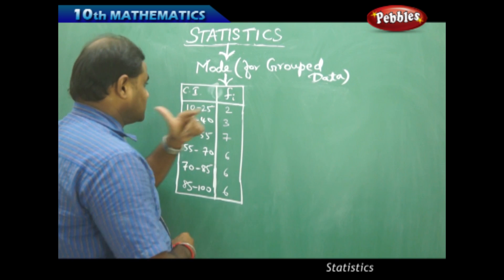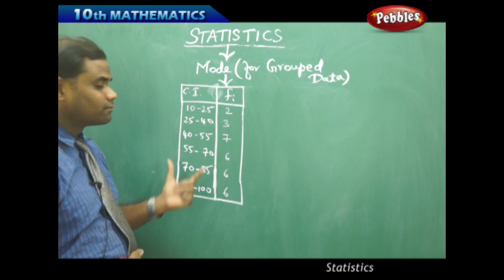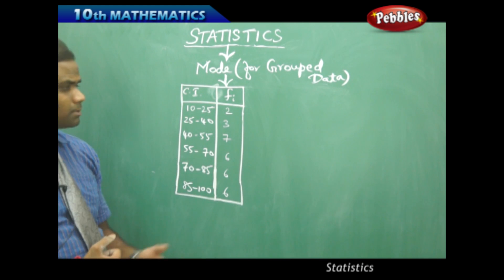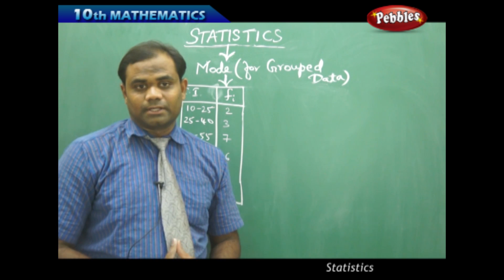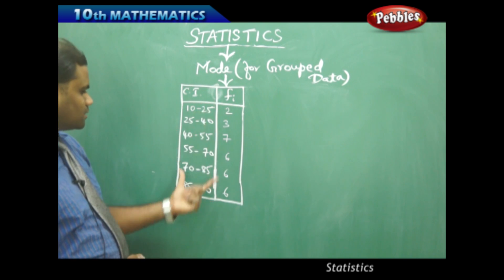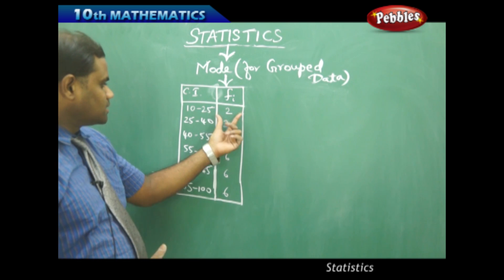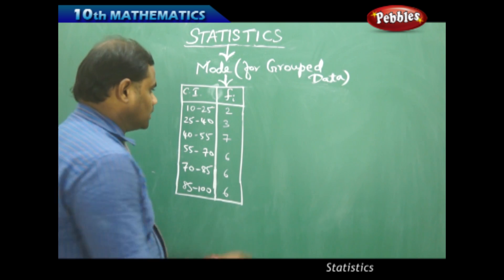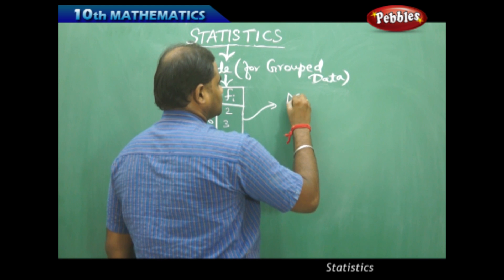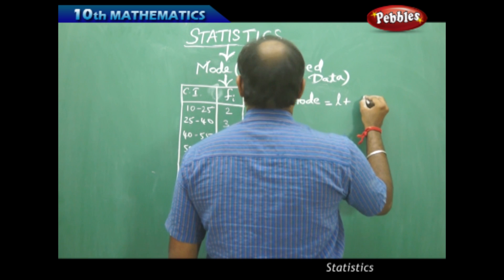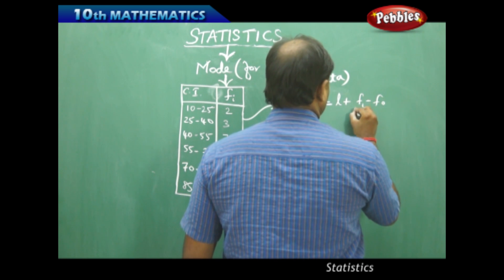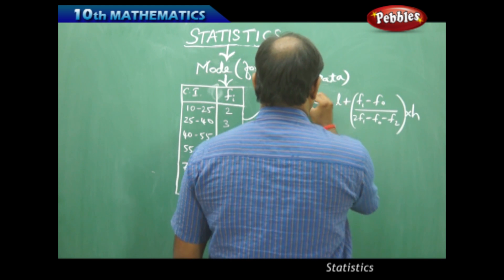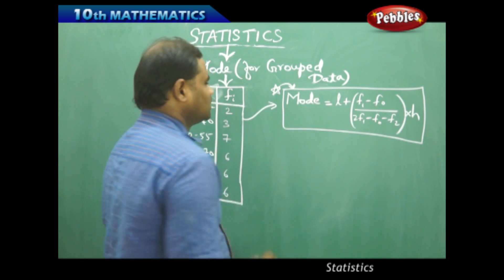Now let's see how to calculate mode for grouped data — data grouped into class intervals. Taking the same problem from the previous session, where we have class intervals of marks obtained by students in mathematics out of 100, with class length of 15 and frequencies given. For grouped data, we use the formula: Mode = L + [(F1 − F0) / (2F1 − F0 − F2)] × H.